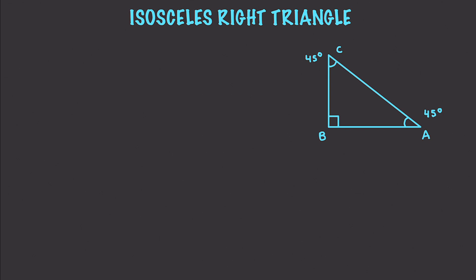The very first thing I want to talk about is isosceles right triangles, and they're very simple to understand. They are triangles in which you have 90 degrees and the other two angles are equal at 45 degrees, and also the two legs are equal in length. Any triangle contains three angles, and they are going to sum to 180 degrees.